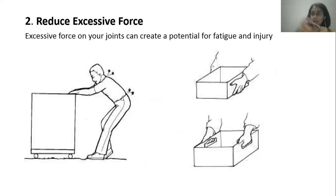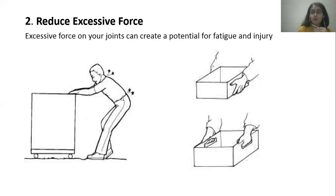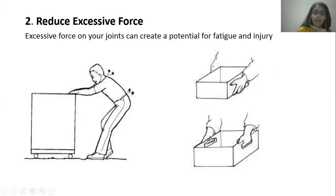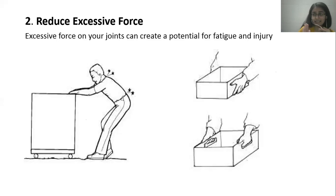When a part of the body is repeatedly subjected to a single kind of stress or force, it will fatigue, and if still subjected to the same force, it will get injured. For example, a person pulling or pushing something while straining his neck and back — you can modify this by putting bigger wheels on the box so he can push it with slight effort without straining his back or neck, or use mechanical aids like a harness or cart.